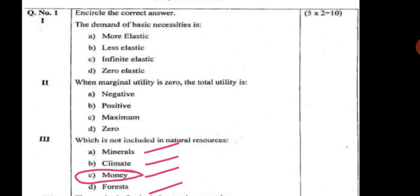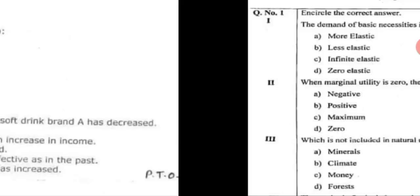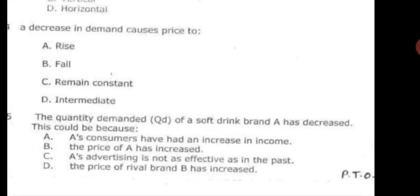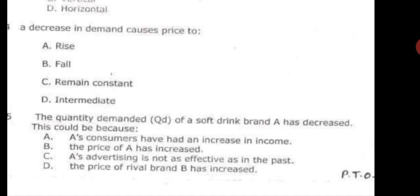The next question is: which of the following is not included in national resources? The options are minerals, climate, money, and forest. Obviously, money is not a natural resource — the others are natural resources. So the correct answer is money.